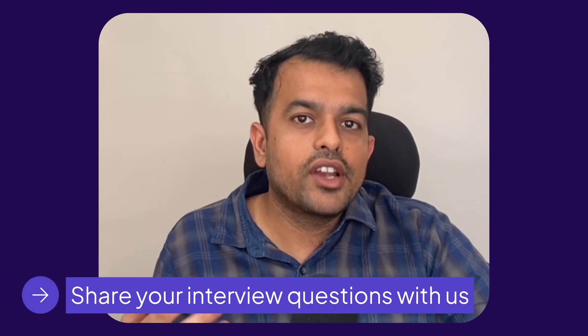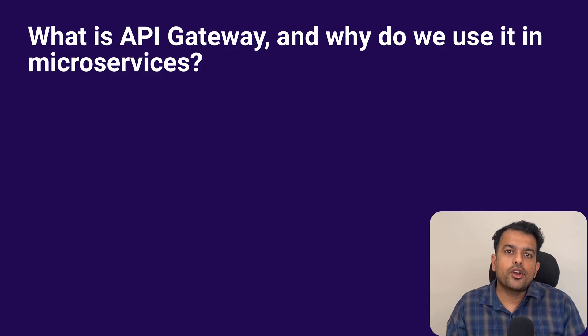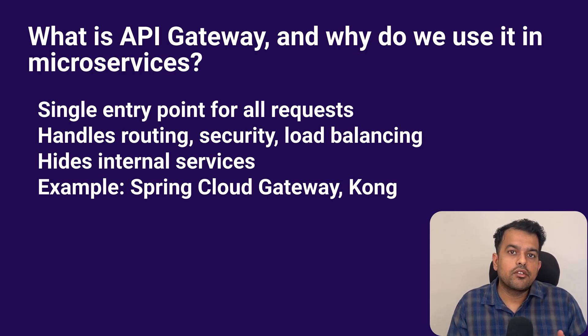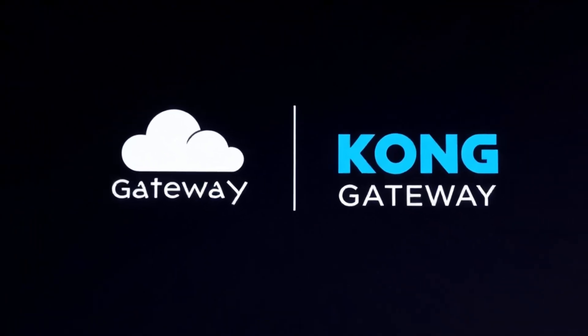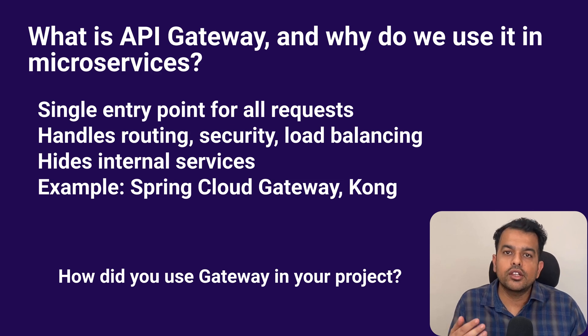Quick reminder: if you faced a Java interview recently, please share your questions using the form in the description. You can also join our mock interview session via the form there. Then the interviewer asked: what is an API gateway and why do we use it in microservices? The API gateway is a single entry point for all client requests in a microservice setup. It routes requests to the right service, applies security, handles rate limiting, and performs load balancing. It also hides internal service URLs from the client. We use Spring Cloud Gateway or Kong Gateway. A follow-up: how did you use it in your project? We used Spring Cloud Gateway with JWT authentication — each incoming request was validated at the gateway before forwarding to the internal microservice.